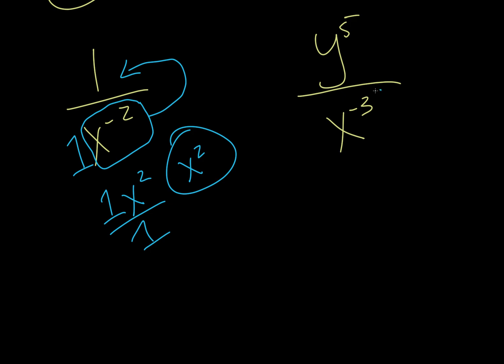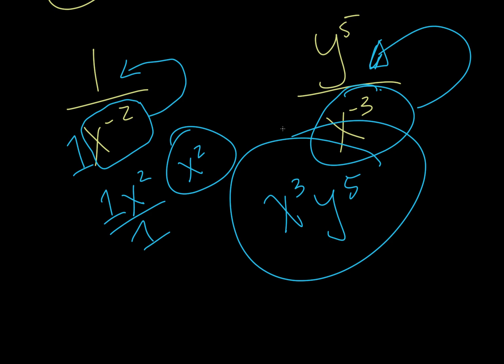This one, we can just think of it as this piece needs to come up top. So y to the 5 stays on the top, but then we also have x to the 3. Since everything on the bottom moved, we don't need to keep that 1 on the bottom, and so that would be the final answer.